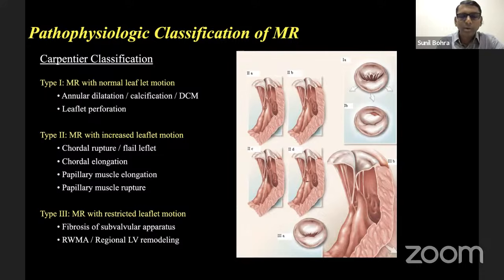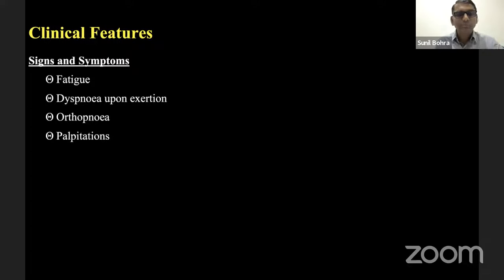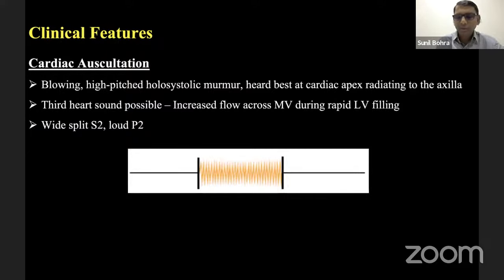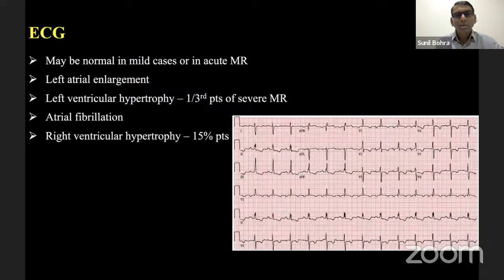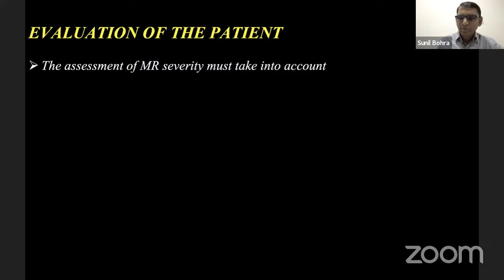Before proceeding to evaluation, important clinical features to keep in mind: symptoms of MR include fatigue, dyspnea, orthopnea, palpitations, and complications from LV volume overload — pulmonary hypertension, pulmonary edema especially in acute MR, and risk of embolization and AF. On examination, look for the holosystolic murmur. Check ECG for left atrial enlargement, left atrial hypertrophy, and atrial fibrillation. On chest X-ray, look for cardiomegaly and double atrial shadow.